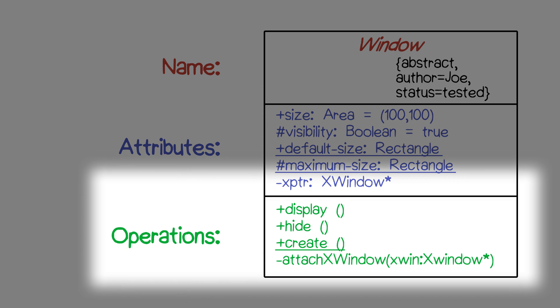In the bottom most of the three units is a description of the operations which a window object can provide. In this case, it can display, it can hide, and so on.